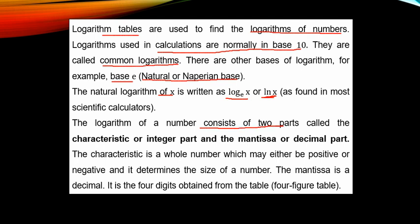The two parts of a logarithm are called the characteristic, or integer part, and the mantissa, or decimal part. So note that the log of any number has two parts: the first part is the characteristic or integer part, and the second part is the mantissa or decimal part.